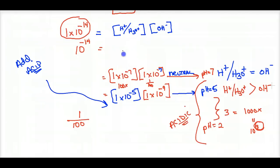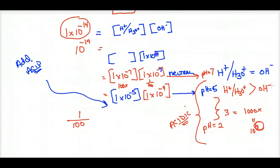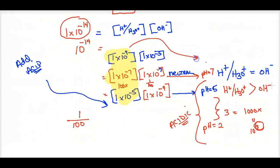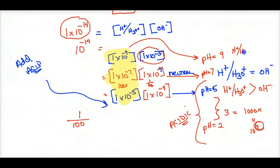If I add a base, starting neutral, the OH⁻ increases 100 times to 1×10⁻⁵. Then [H⁺] must be 1×10⁻⁹ to keep the product at 10⁻¹⁴. The pH is always about the H⁺ concentration, never the hydroxide — that would be pOH. So the pH is 9, and H⁺ is less than OH⁻. This is the basic range.